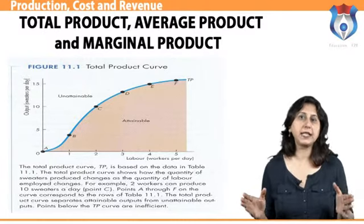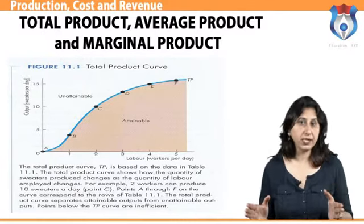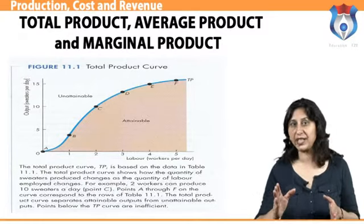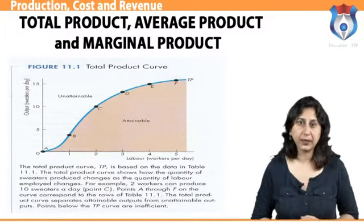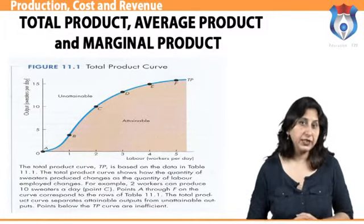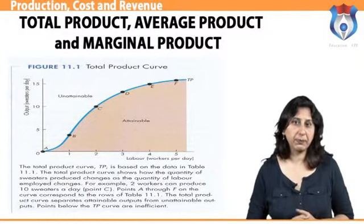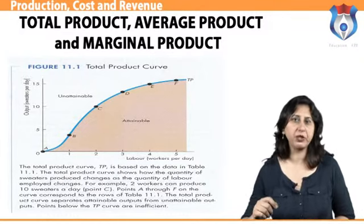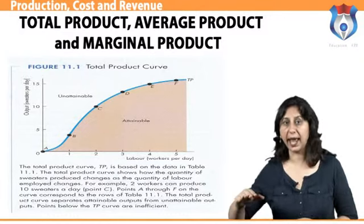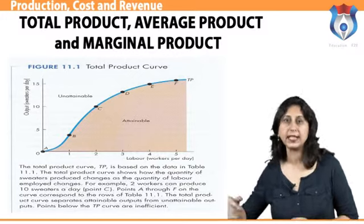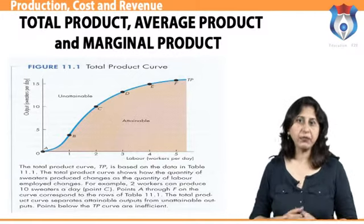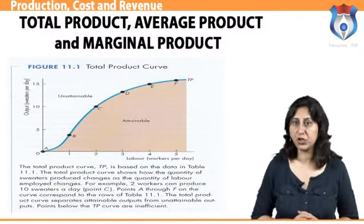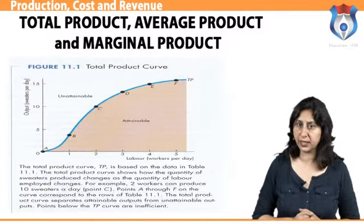The total product curve is a graphical representation of the relation between the total product and the variable input. The overall slope of this curve is positive, with extra workers generally leading to greater production. However, the curve has a distinctive shape — emerging steeply from the origin, then flattening and eventually declining. The shape of this curve is attributable to the law of diminishing marginal returns.